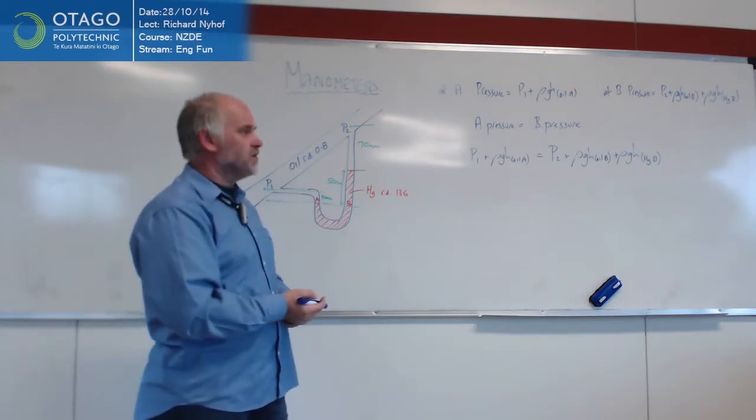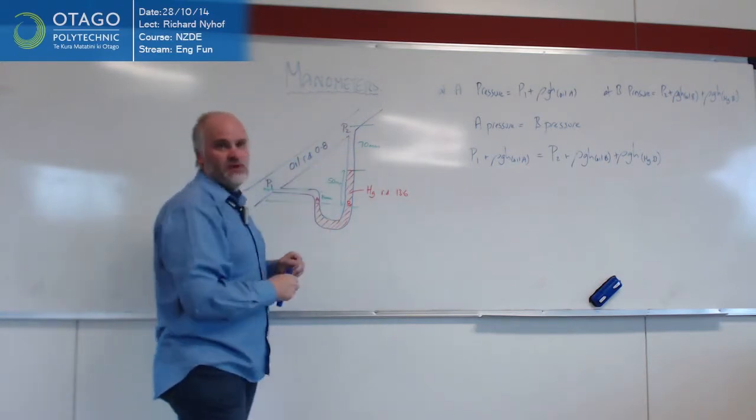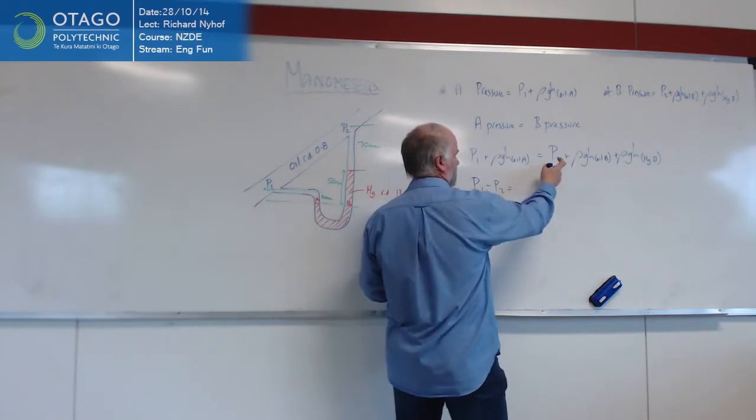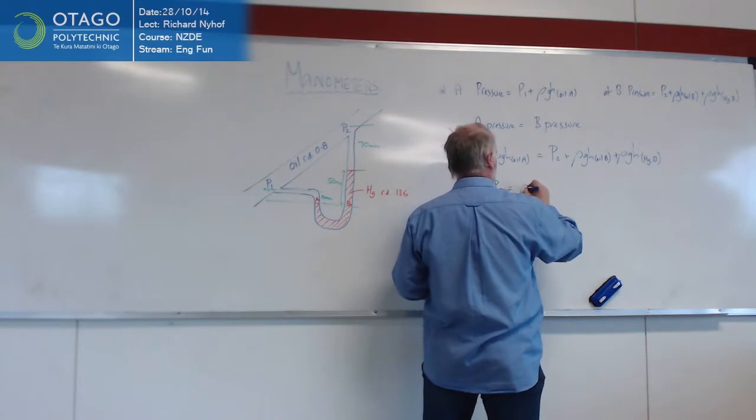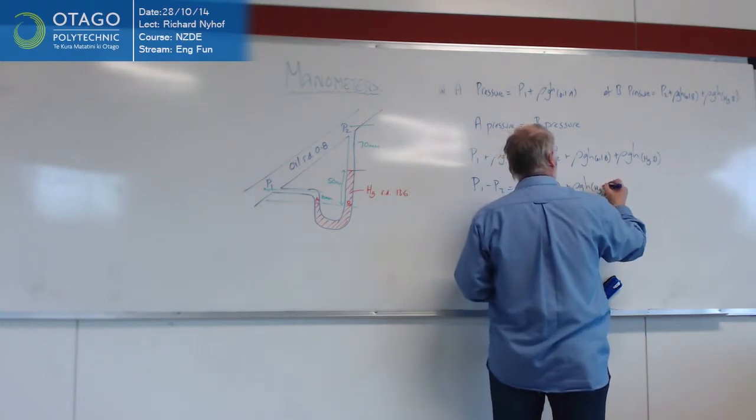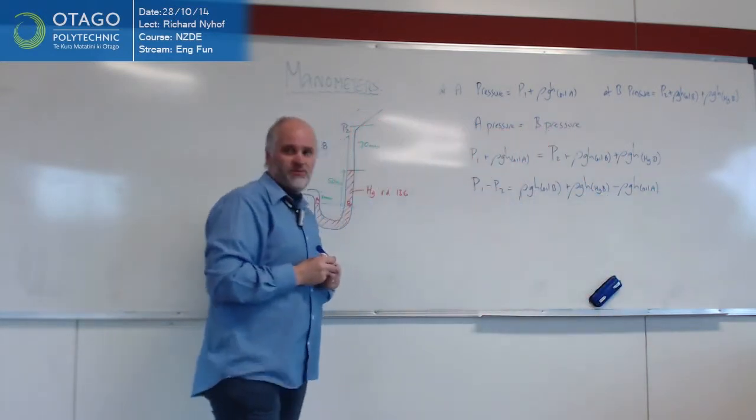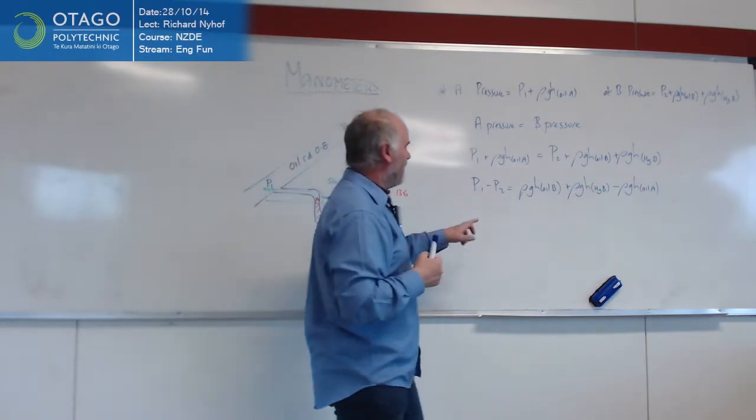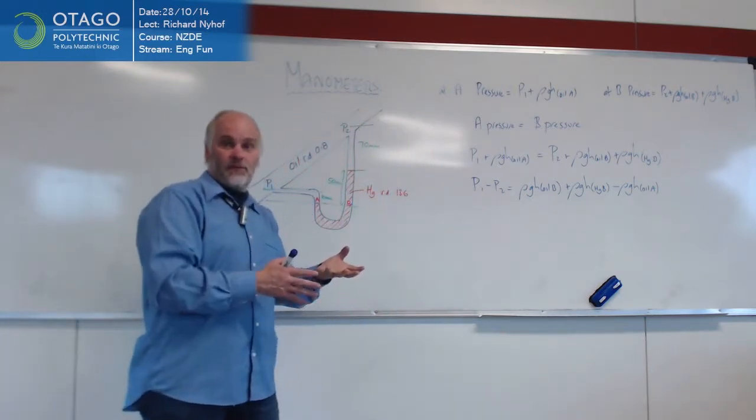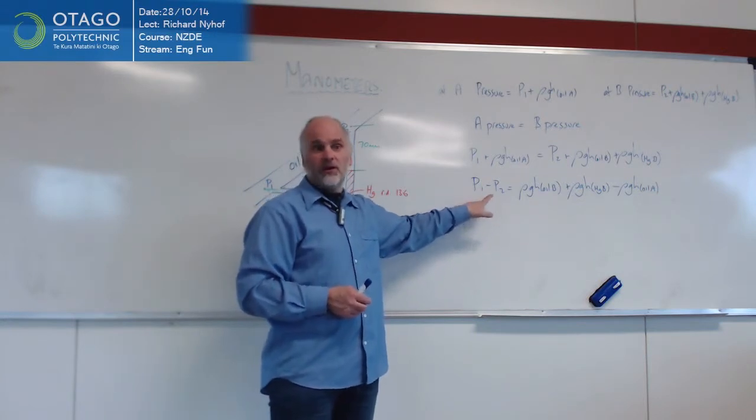And what you're normally doing with these sort of questions is you're trying to find the difference between the two pressures. You're trying to find how much pressure differential there is between these two things. So you're normally trying to find something like P1 minus P2. So subtraction: ρgh oil B plus ρgh mercury B minus ρgh oil A. Just a bit of algebra. We haven't got enough information to work out either P1 or P2 by themselves, but we can work out the difference between them. That's why it's called a differential manometer. It's just going to work out a pressure difference.